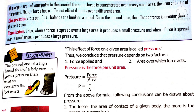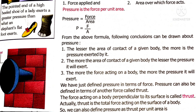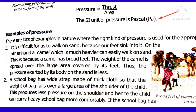The other name of force is thrust. So pressure equals thrust divided by area. The unit of pressure is pascal. One pascal is defined as when one newton of force acts on one square meter of area. Pressure is a scalar quantity because it has only magnitude, not direction. At a particular point, the pressure of air exerts in all directions, so there is no specific direction for pressure — making it a scalar quantity, not a vector quantity.